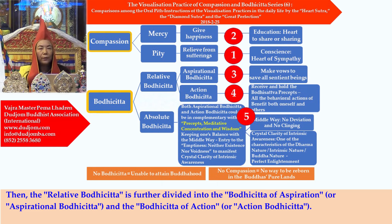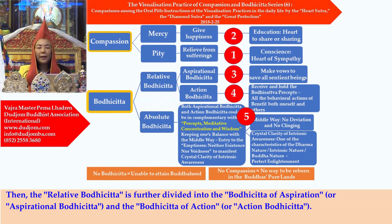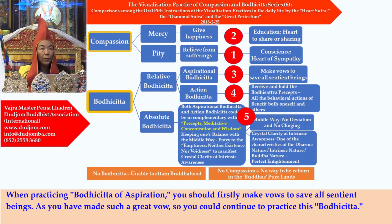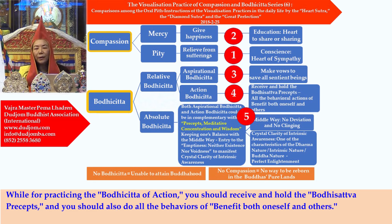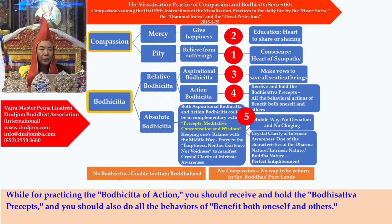The relative bodhicitta is further divided into the bodhicitta of aspiration — aspirational bodhicitta — and the bodhicitta of action. When practicing the bodhicitta of aspiration, you should firstly make vows to save all sentient beings. As you have made such a great vow, you can continue to practice this bodhicitta. For the bodhicitta of action, you should receive and hold the bodhisattva precepts and do all behaviors that benefit both oneself and others.